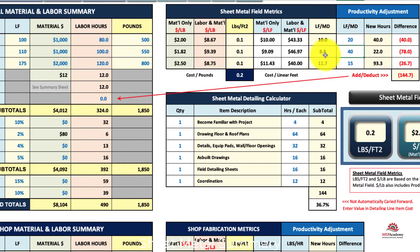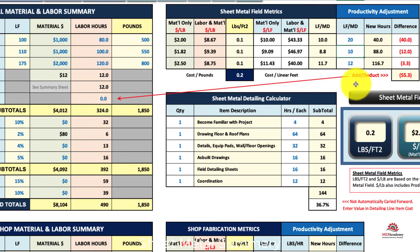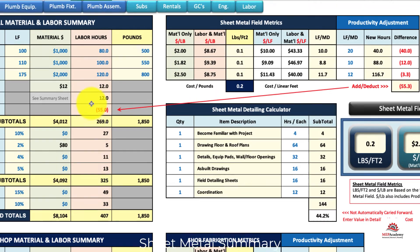For example, this one came out at 8.8 linear feet per man day, and if you can do it at 10, and another came in at 11 — let's round it to 12 — it tells you you need to deduct 55 hours from your bid. So you come over here and enter minus 55, and you'll get a new productivity rate which will show on your dashboard.